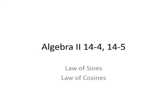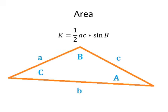Alright, so our last sections that we're going over, we're going to combine into one. It's 14.4 and 14.5, which is our Law of Sines and Law of Cosines. We're going to be doing both of them here, and also talking about an area formula. This is going to be dealing with triangles where we don't have a 90-degree angle — so if we're not dealing with right triangles.